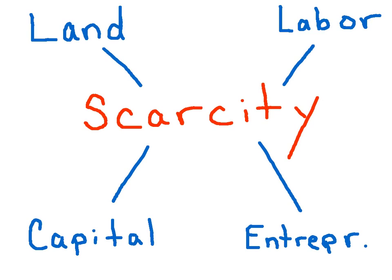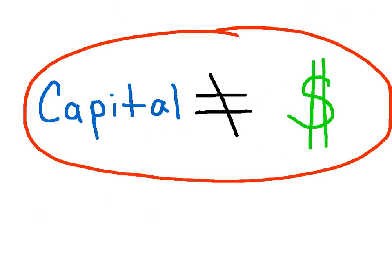Land consists of the natural resources. Labor is your human capital, your workers. Capital goods are our tools and machinery. And the entrepreneur is the risk taker that combines land, labor, and capital with the hopes of making a profit. Remember, in this class, capital does not mean money — capital just means the tools and machinery that are used to produce other goods.